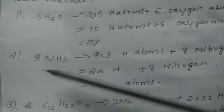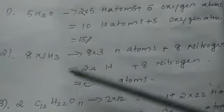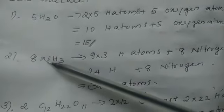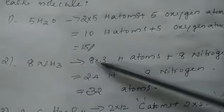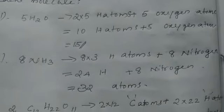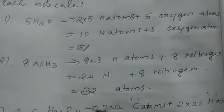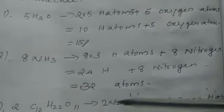Then 8 ammonia, 8 NH3. 8 into 3 hydrogen atoms. This 8 is common for both nitrogen and hydrogen. So 8 into 3 hydrogen atoms plus 8 nitrogen atoms. That is 24 hydrogen atoms plus 8 nitrogen atoms, that is 32 atoms total.